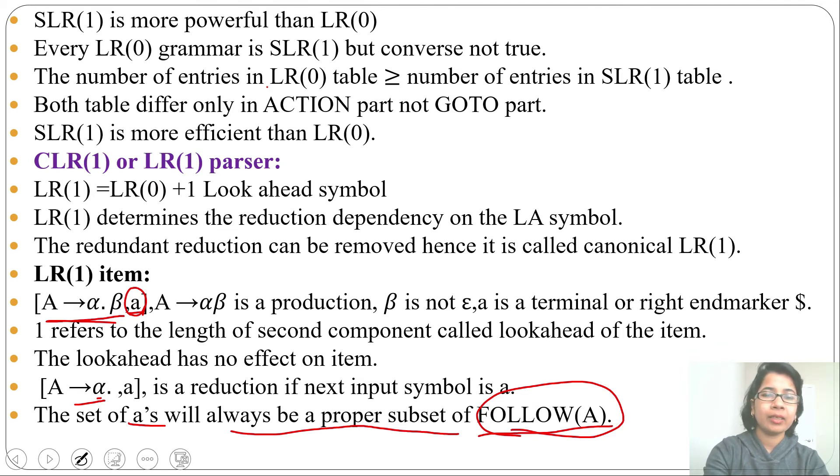In LR0 we are writing in all columns of action part. In SLR1 we are writing follow of LHS side variable. And in CLR1 we are writing on lookahead symbol. And this lookahead symbol is proper subset of follow of LHS side variable.